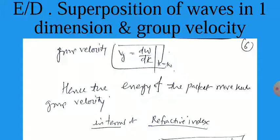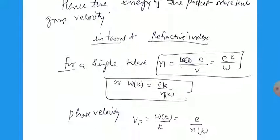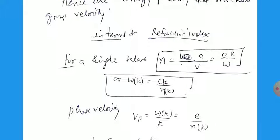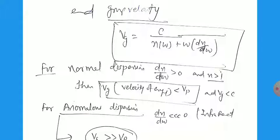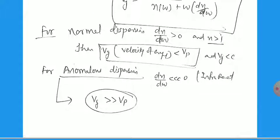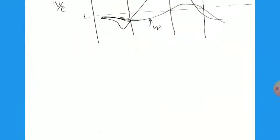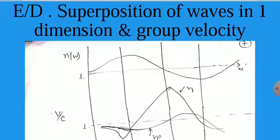In terms of the refractive index, for a single wave n equal to c by v, and since v equals omega by k, the refractive index is n equal to ck by omega. For the group, the phase velocity is omega by k equal to c by n(k), and the group velocity vg equals c divided by [n(omega) plus omega times dn(omega) by d omega]. For normal dispersion, as we know, dn by d omega is greater than 0 and n is greater than 1, so vg is much less than vp — group velocity is less than phase velocity. But for anomalous dispersion, dn by d omega is less than 0, so generally vg is greater than vp. This is the curve for these two cases, the relationship between omega and n(omega). This is sufficient for today, thank you very much.